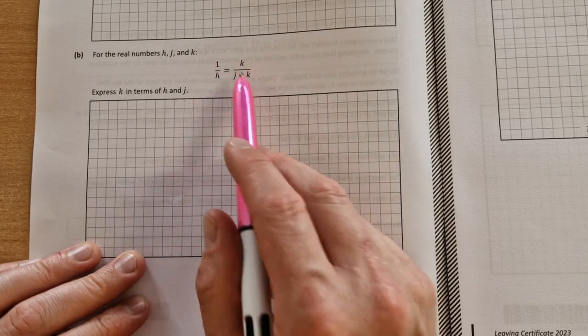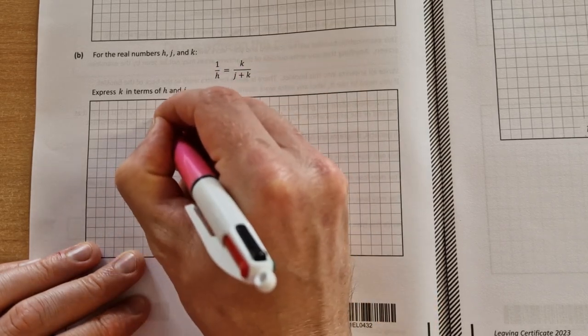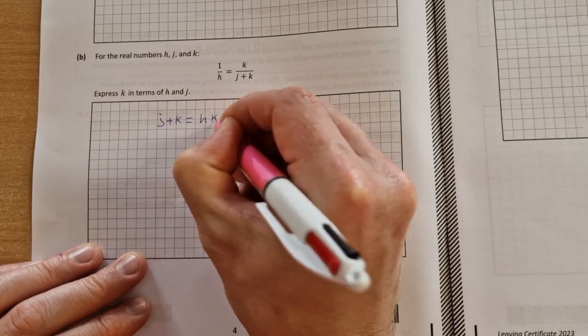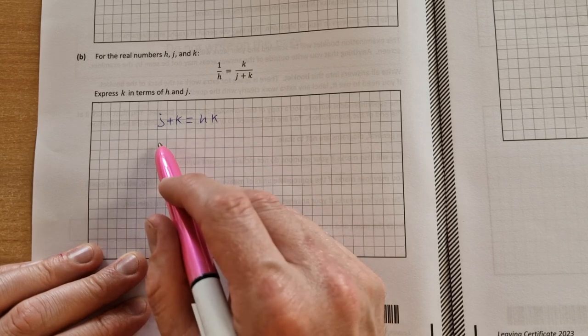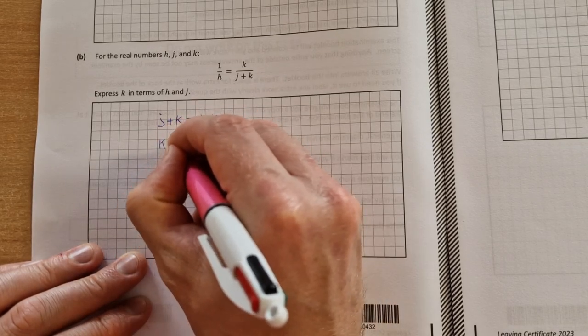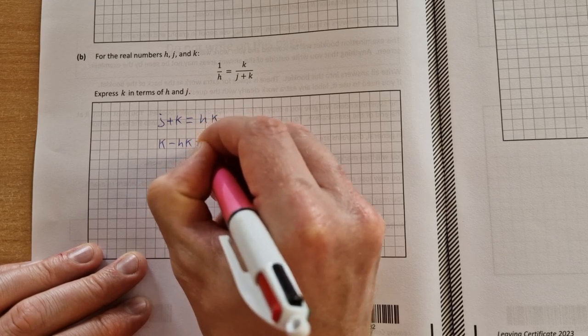The first thing I would do is cross-multiply to get j plus k is equal to hk. Then you want to get everything with a k on its own on one side, and then everything without a k on the opposite side. So I'll say k minus hk is equal to minus j.